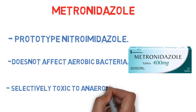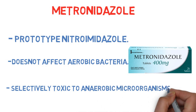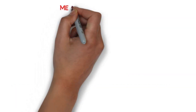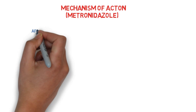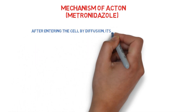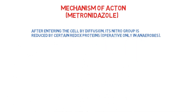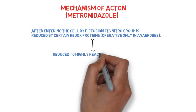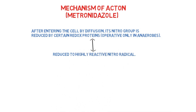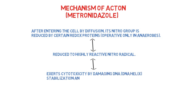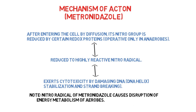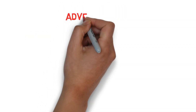Metronidazole does not affect aerobic bacteria; it is selectively toxic to anaerobic microorganisms. Regarding its mechanism of action: after entering the cell by diffusion, its nitro group is reduced by certain redox proteins operative only in anaerobes, leading to a highly reactive nitro radical. This radical exerts cytotoxicity by damaging DNA — causing DNA helix destabilization and strand breaking. Note: the nitro radical of metronidazole causes disruption of energy metabolism of anaerobes.